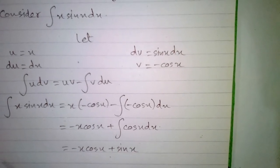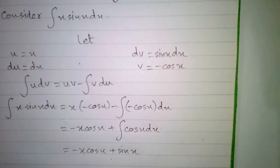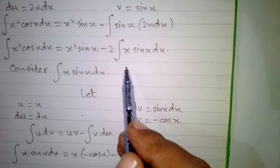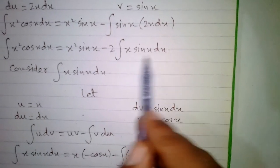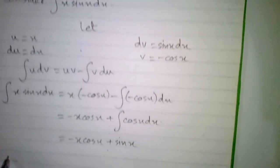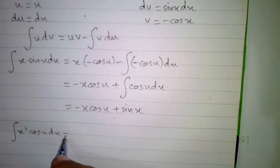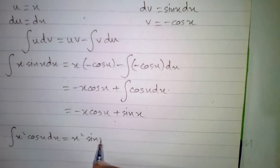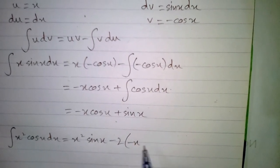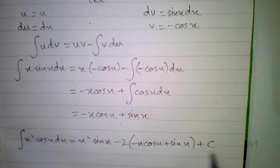Now we substitute the value of the integral of x sin x dx back into the main integral. We have found that the integral of x sin x equals minus x cos x plus sin x, so we put this value back in: the integral of x squared cos x dx equals x squared sin x minus 2 times the quantity minus x cos x plus sin x, plus C, where C is the constant of integration.